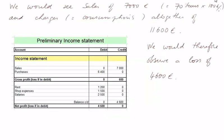We would see sales of 7,000, which correspond to 70 items sold at 100 euros apiece. And charges altogether adding up to 11,600 euros. Therefore, we would observe a loss of 4,600 euros.